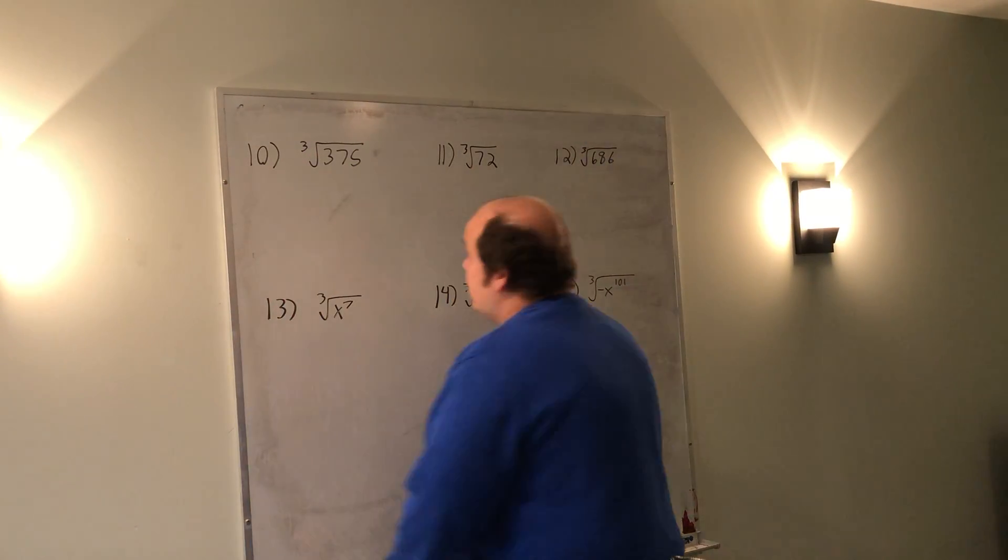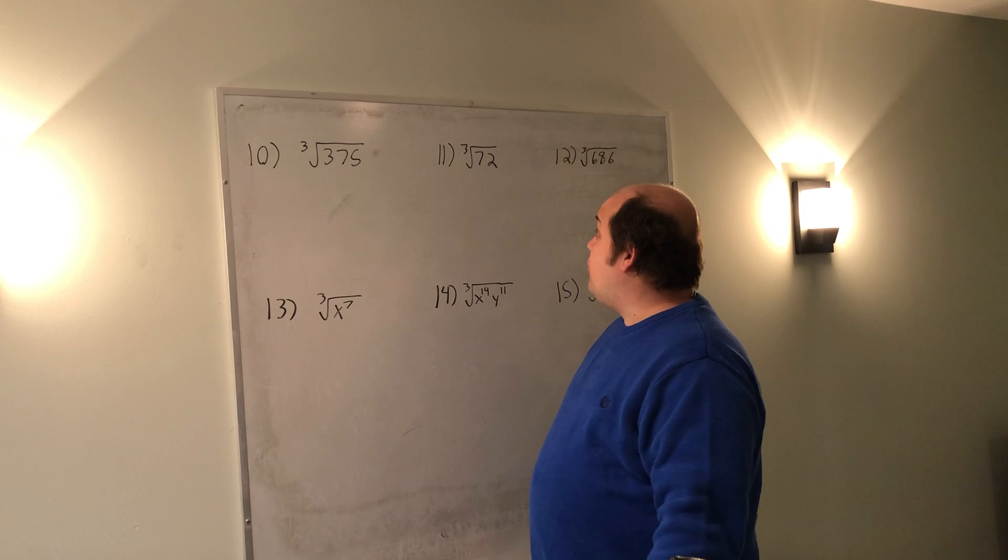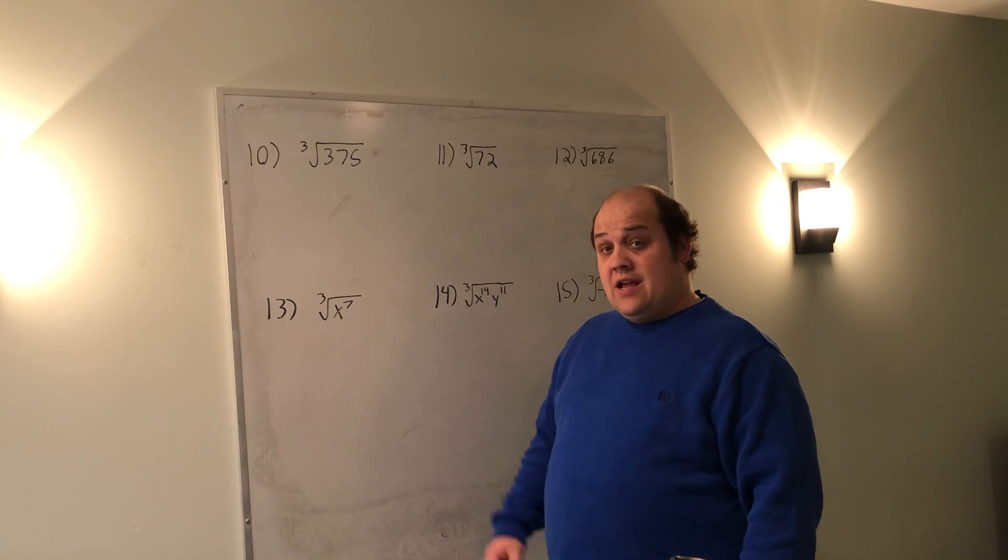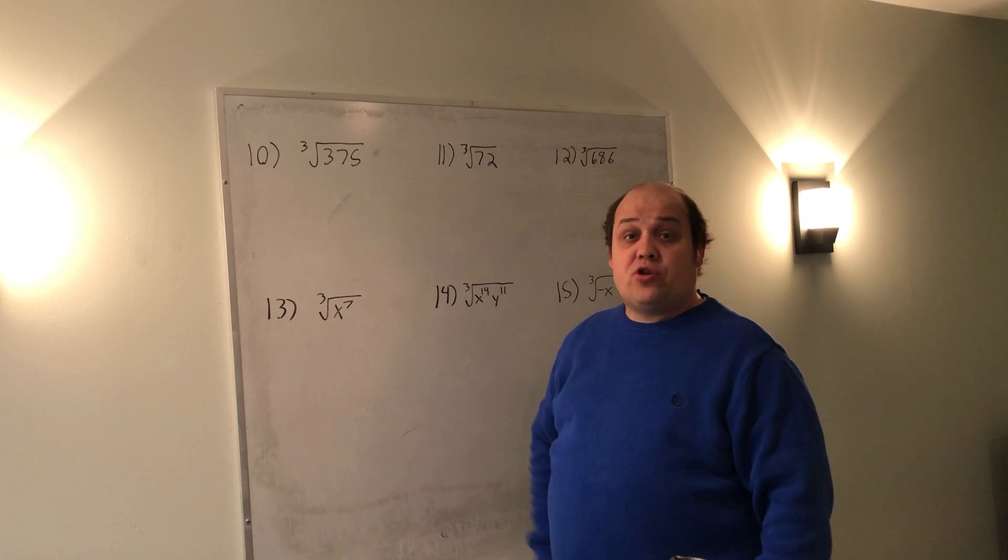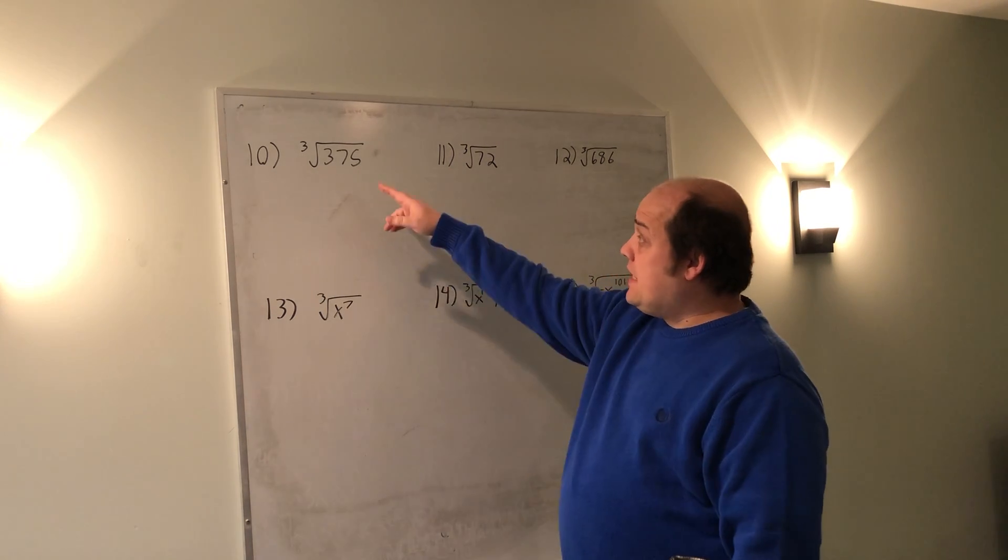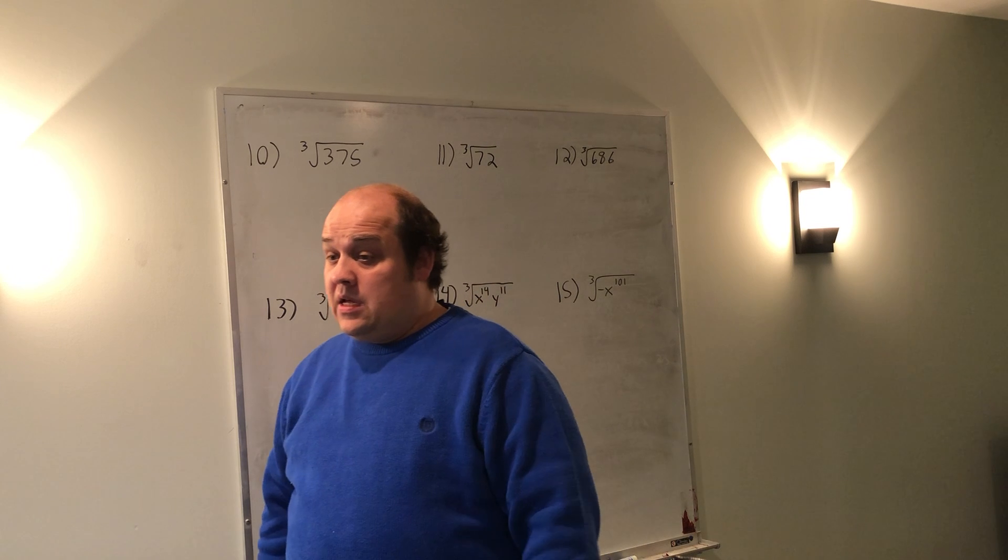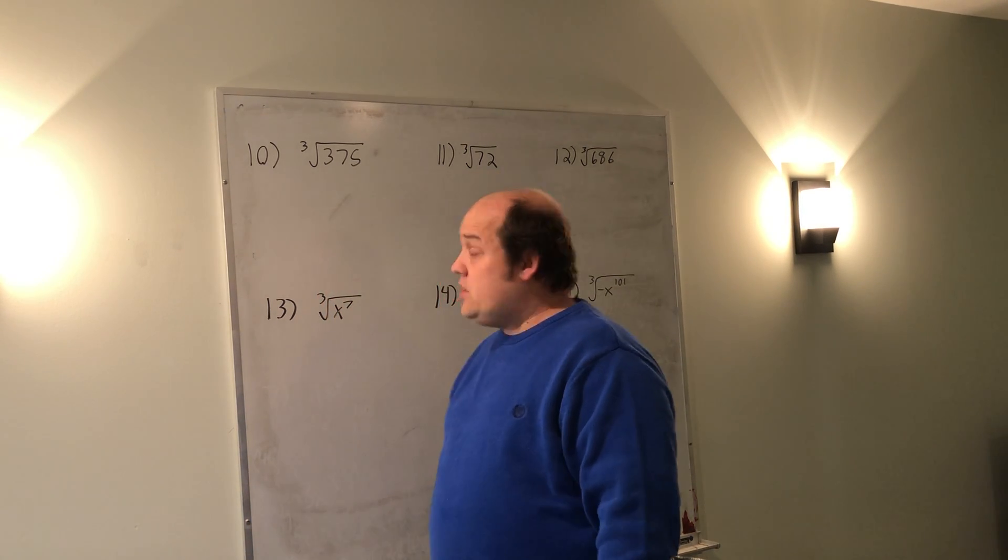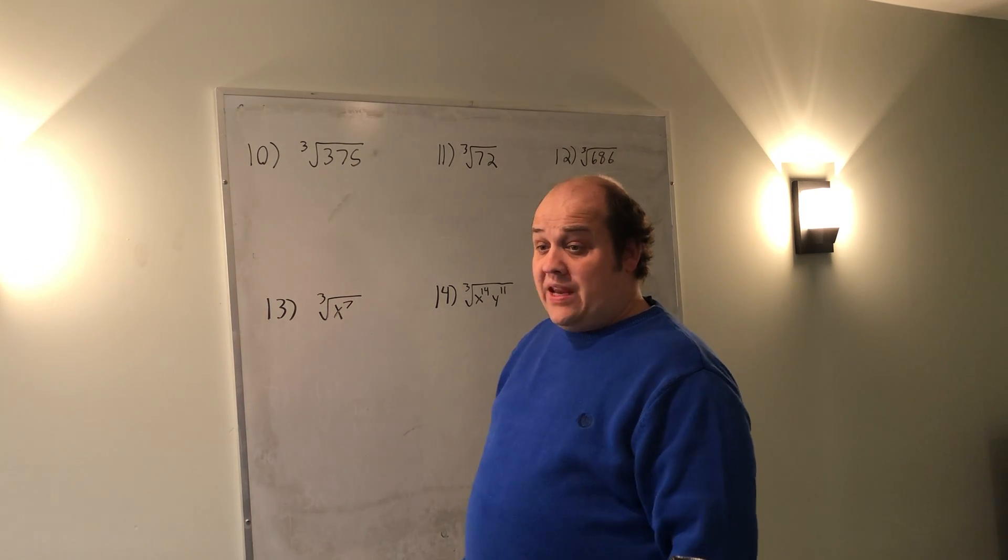The second half of this worksheet deals with third roots. So here on my common squares and cubes paper, I need to be looking at the column marked cubes. In this case, 375. When I go to my column, it looks like the first thing I can try is 343, which is 7 cubed. 343 doesn't go in evenly.